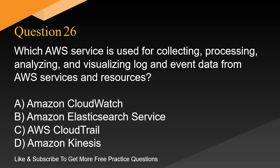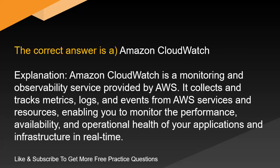Question 26. Which AWS service is used for collecting, processing, analyzing, and visualizing log and event data from AWS services and resources? A. Amazon CloudWatch. B. Amazon Elasticsearch Service. C. AWS CloudTrail. D. Amazon Kinesis. The correct answer is A: Amazon CloudWatch. Amazon CloudWatch is a monitoring and observability service provided by AWS. It collects and tracks metrics, logs, and events from AWS services and resources, enabling you to monitor the performance, availability, and operational health of your applications and infrastructure in real-time.